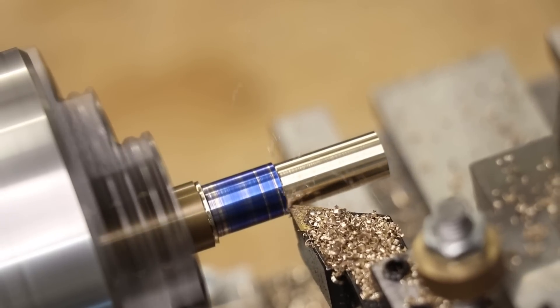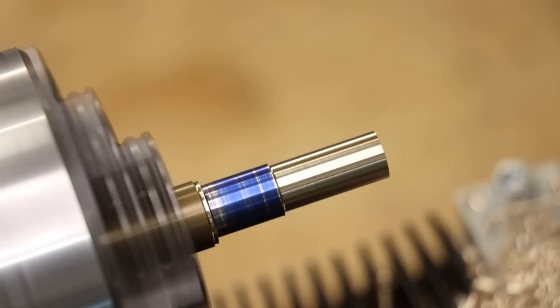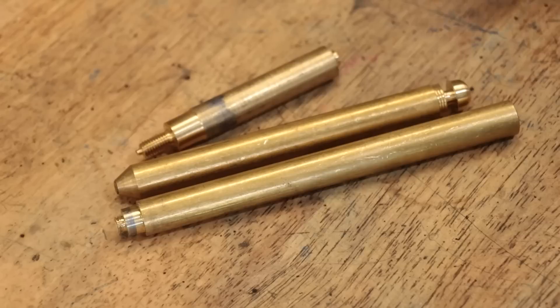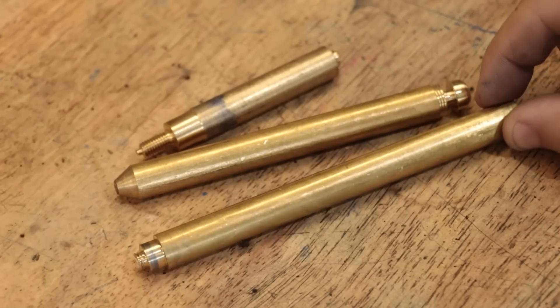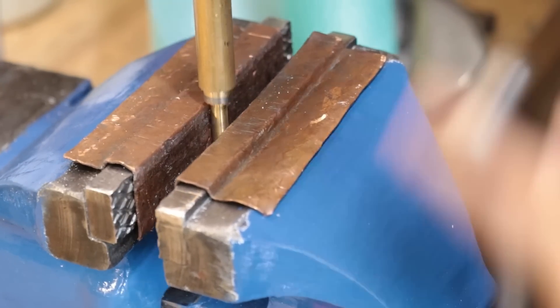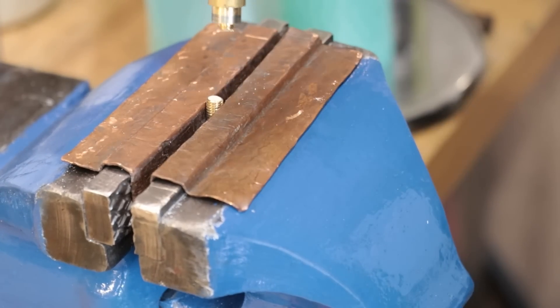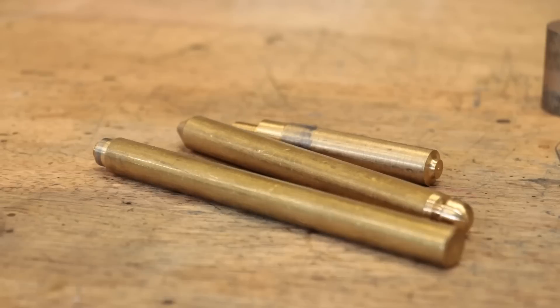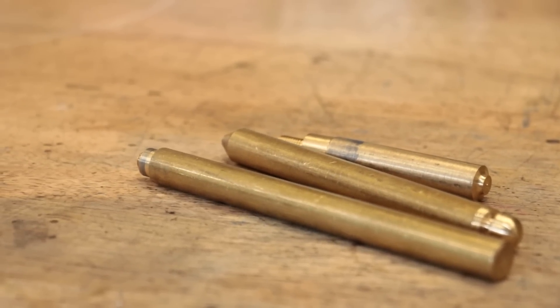The disadvantages to using brass mostly stem from the price, which is to be expected due to the copper content, but it's also susceptible to corrosion or de-zincification, and it can also work harden very quickly which can cause parts to quickly fail when put under load. Overall, definitely a very good material to have on hand when starting out.